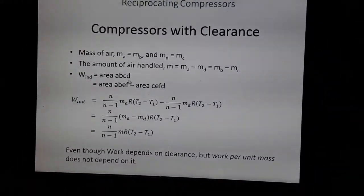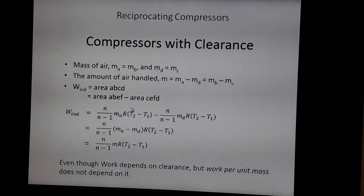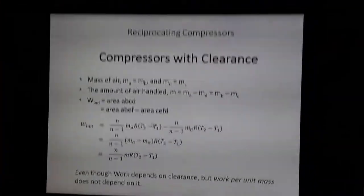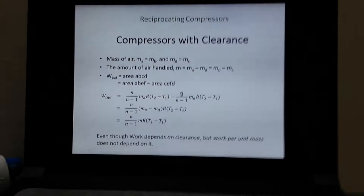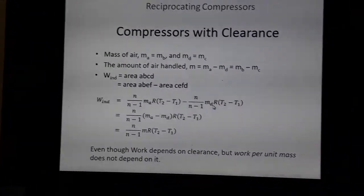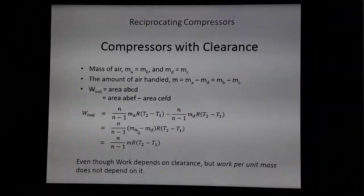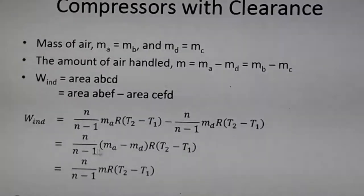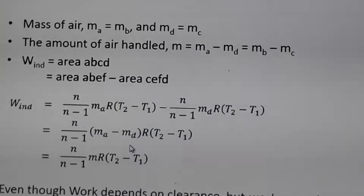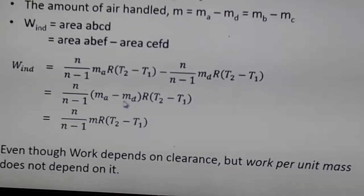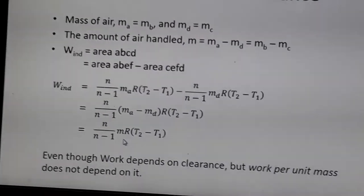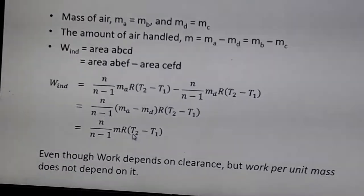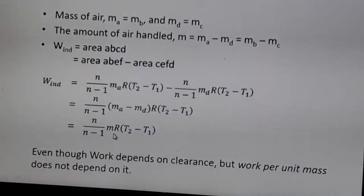For area a-b-e-f, the indicated work is n/(n−1) · m_a · R · (T2 − T1), and for area c-e-f-d it is n/(n−1) · m_d · R · (T2 − T1). Taking the common factor n/(n−1) · R · (T2 − T1), we get n/(n−1) · (m_a − m_d) · R · (T2 − T1). Since m_a − m_d equals the net mass m, the indicated work simplifies to n/(n−1) · m · R · (T2 − T1), where m is the net mass delivered.